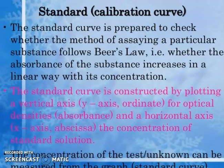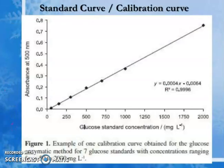Standard calibration curve: the standard curve is prepared to check whether the method follows Beer's law — that is, whether absorbance increases linearly with concentration. The curve is constructed by plotting absorbance on the vertical (y) axis and concentration of standard solutions on the horizontal (x) axis. An example is a calibration curve for the glucose enzymatic method using seven glucose standards with concentrations ranging from 52 to 100 mg per liter.